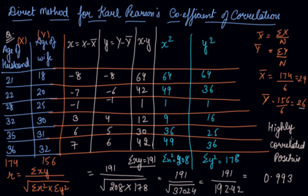So in this way you have to solve the question. This was the direct method to find out the Karl Pearson's coefficient of correlation. I hope you like our video. Please download our Scholars Learning app and enjoy the learning experience with us.